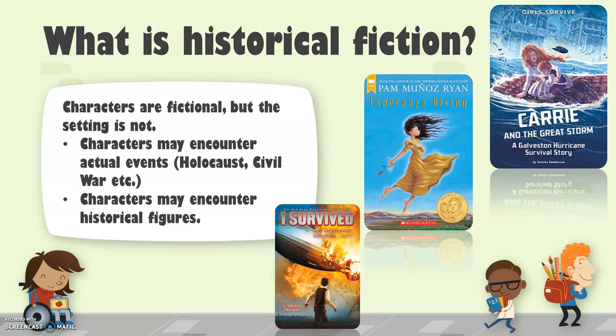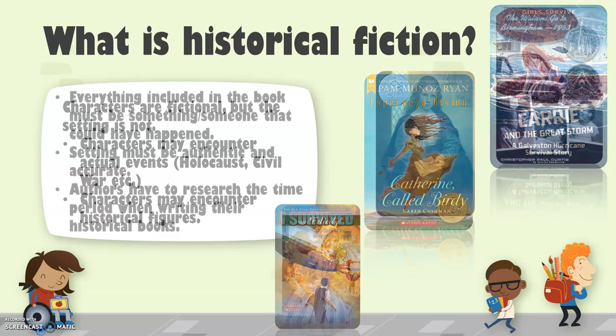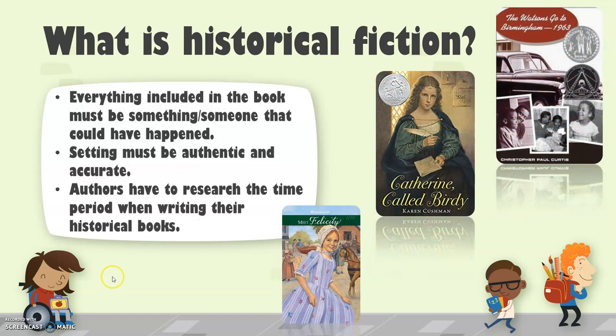The fictional characters might encounter real people. So you might be reading a book about the American Revolution and your character gets to meet George Washington. The main idea is that the characters are not real. Everything included in the book must be something that could have happened or someone that could have really existed during that time. The settings must be accurate and authentic, or else they're not really true historical fiction books.